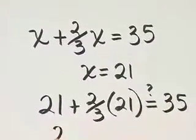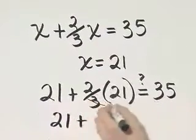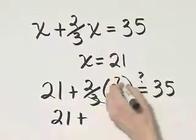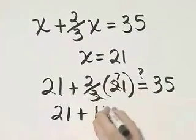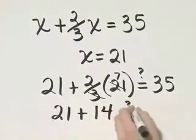Well, let's see. 21 plus—three divides into 21 seven times, two times seven is 14. Is that 35?